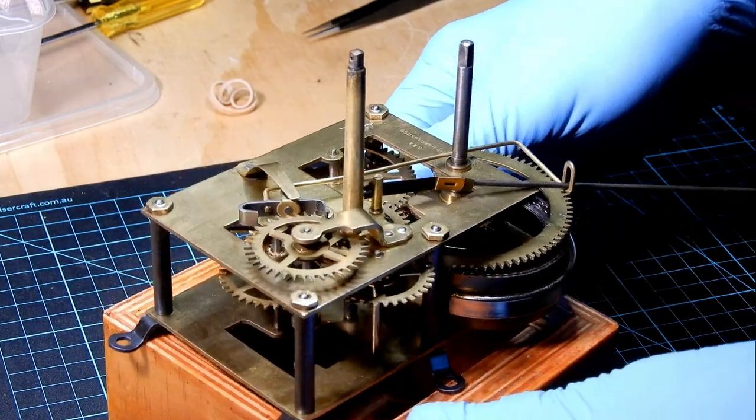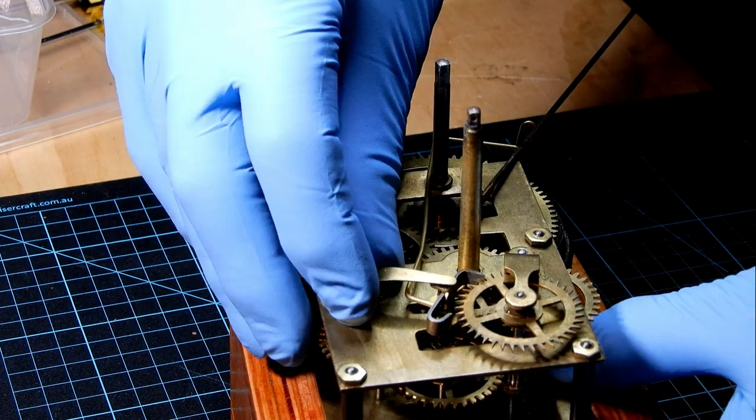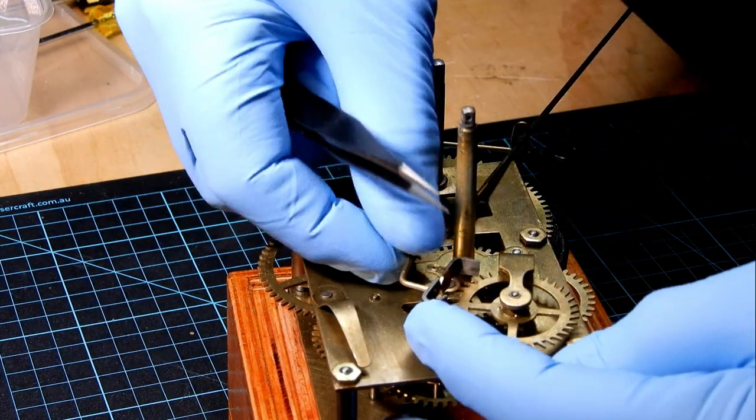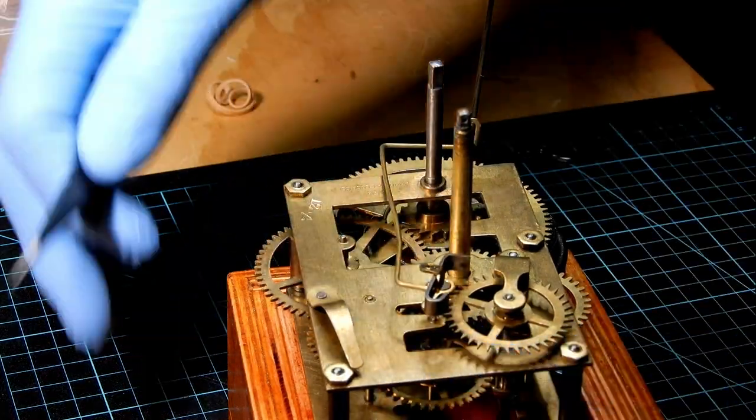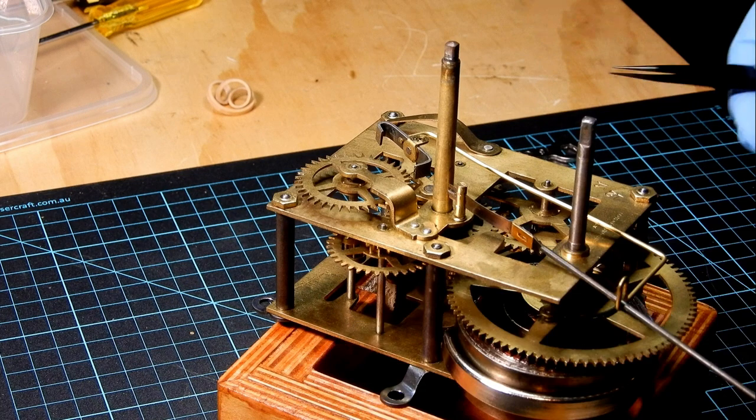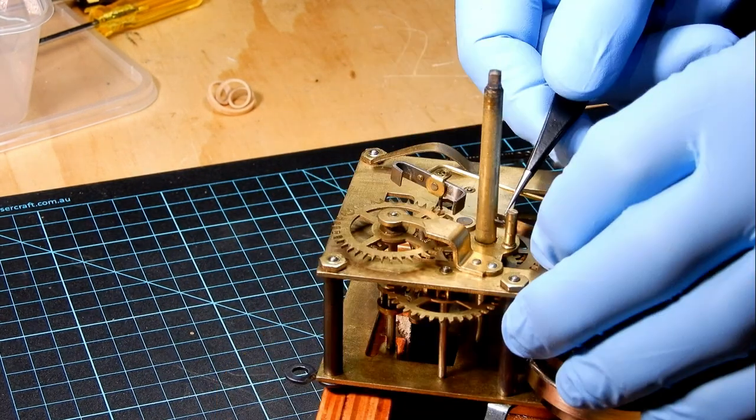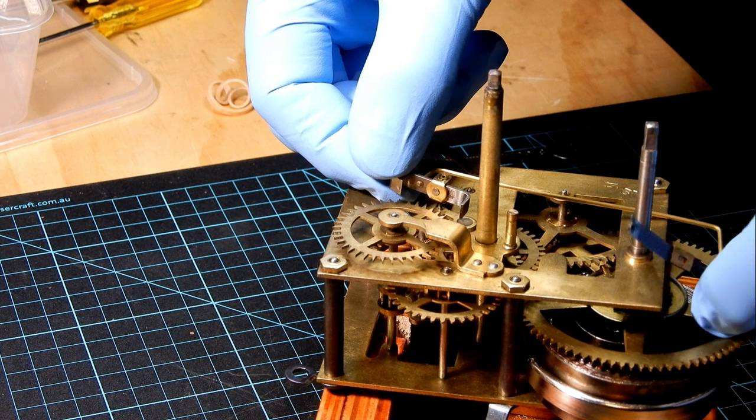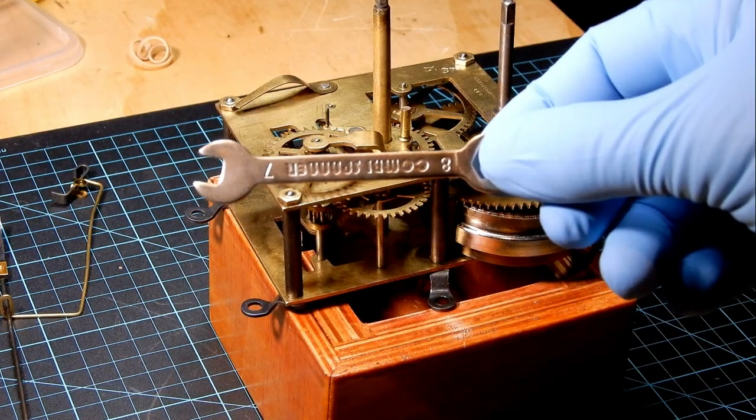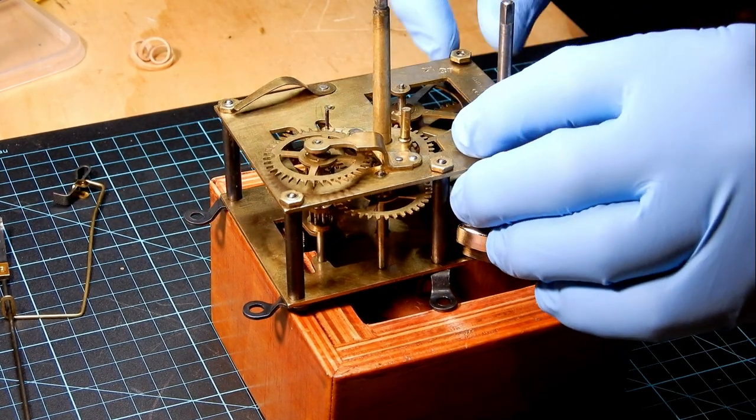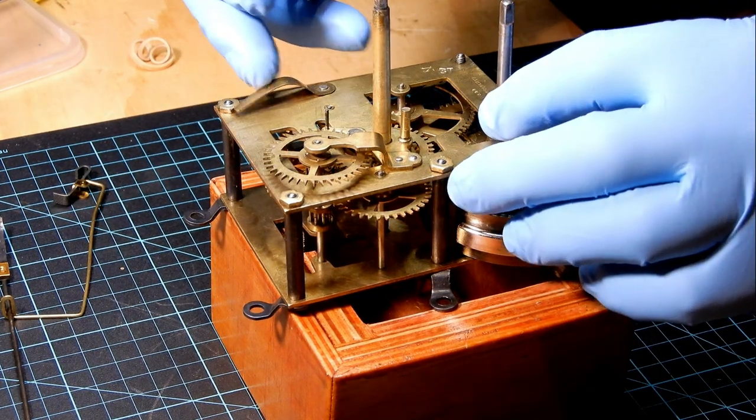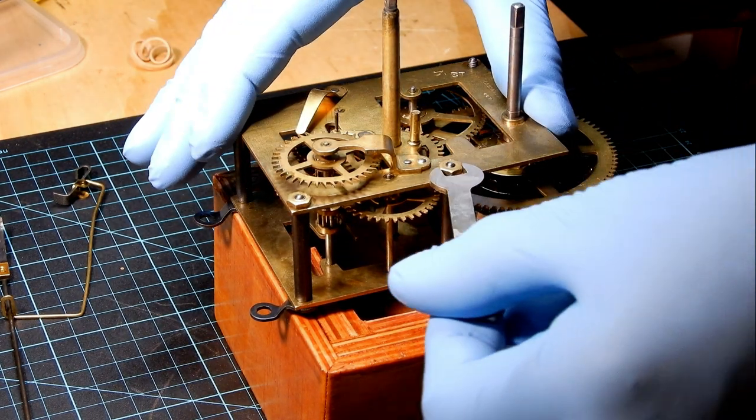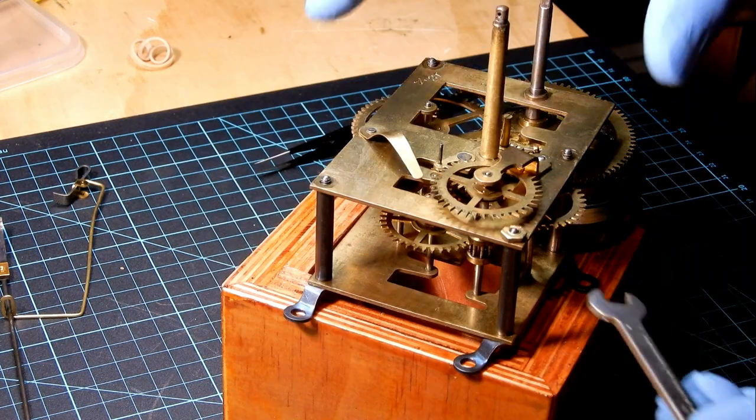Now we'll remove the crutch and the pallets by moving this arm here to the side, and then lifting the crutch off that post. Now we'll remove the suspension spring, being very careful not to bend it. We'll take the crutch off. Using a 7mm spanner, we'll remove the nuts. There's four of them. Put them in a dish.